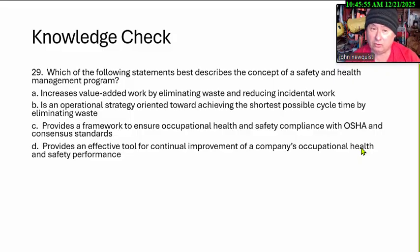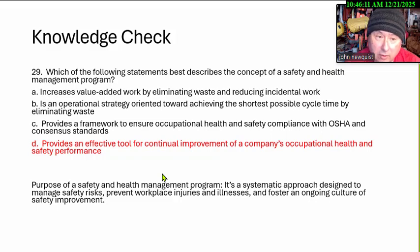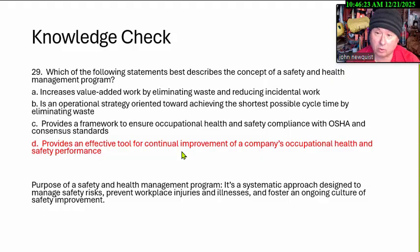This is the classic two good answers and two bad ones. We can throw out A and B — that's not even close. So it's C or D, and they're looking for D. Remember, it's not a framework to just meet the minimum of the OSHA standard. It's continuous improvement of the program — a systematic approach to manage safety risks, prevent injuries, and foster ongoing safety improvement. You don't just stay at the minimum OSHA levels; you exceed it and eventually, hopefully, get to world class.